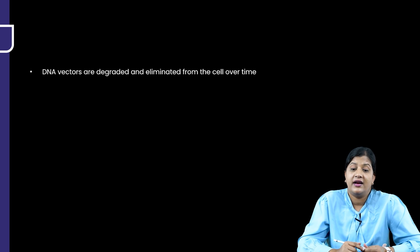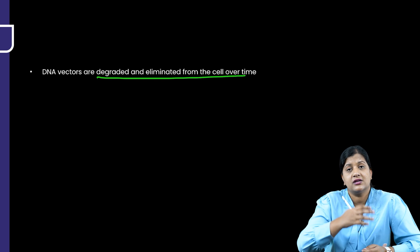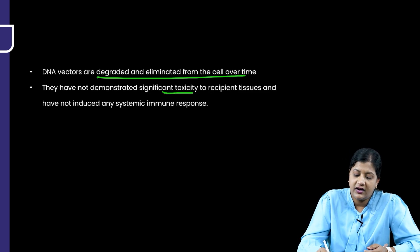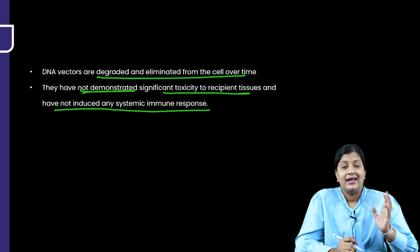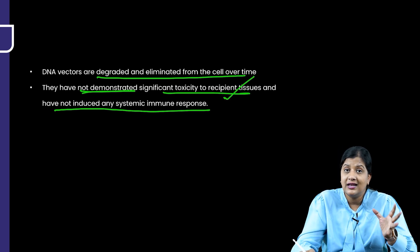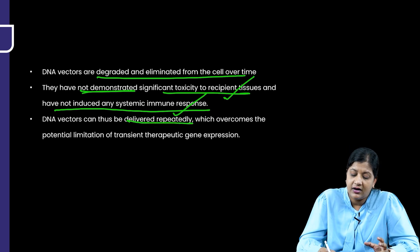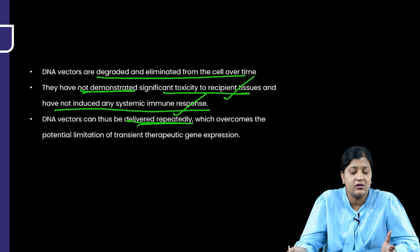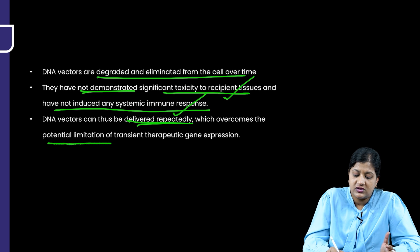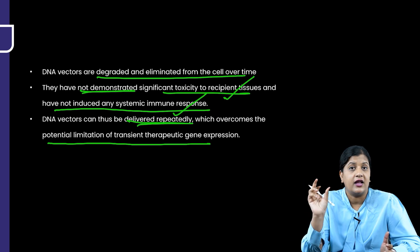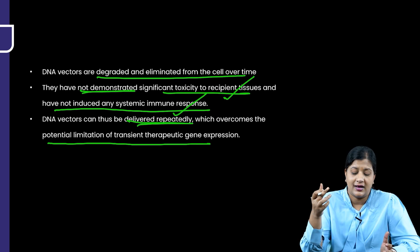DNA vectors are degraded and eliminated from the cell over time, and they have demonstrated significant toxicity to recipient tissues. However, they have not induced any systemic immune response. Because DNA vectors cause no significant target tissue damage and no systemic toxicity, they can be delivered repeatedly, overcoming the potential limitation of transient therapeutic gene expression.